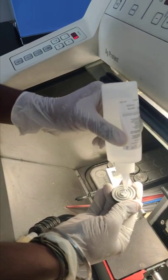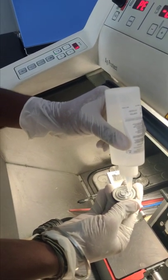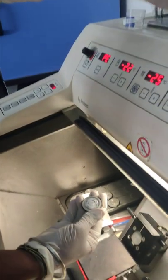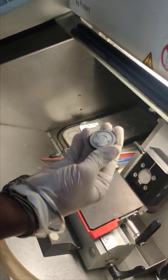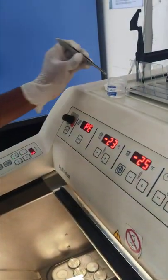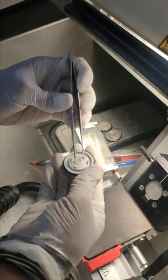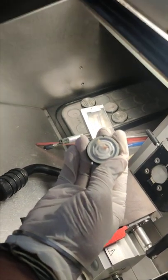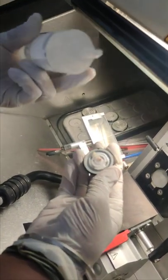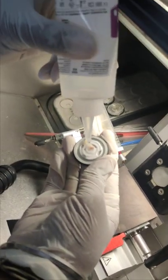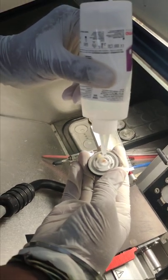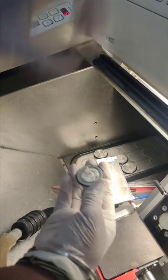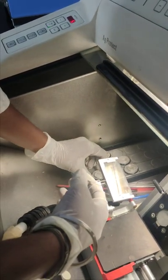We place cryomatrix gel over the check holder, then place the tissue over the gel. Once the tissue is placed, we cover it again with cryomatrix gel and wait for 5 to 10 minutes by placing it in the temperature control holder.